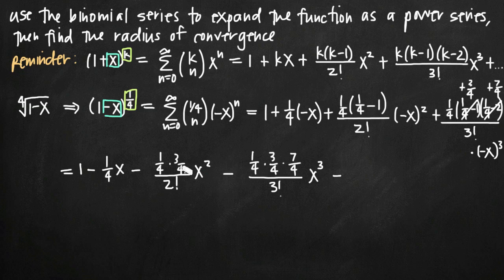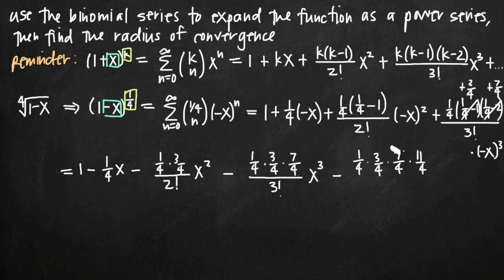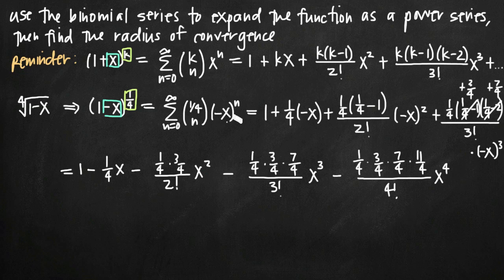Continuing with one more term, we can see the pattern. It always starts with 1/4 and 3/4, then 7/4, and for the fourth term we add another factor of 11/4 — because we add 4 to the numerator of each fraction each time: 3 plus 4 is 7, 7 plus 4 is 11. We divide by 4 factorial and multiply by x to the 4th. This gives us minus the product times x to the 4th and so on.